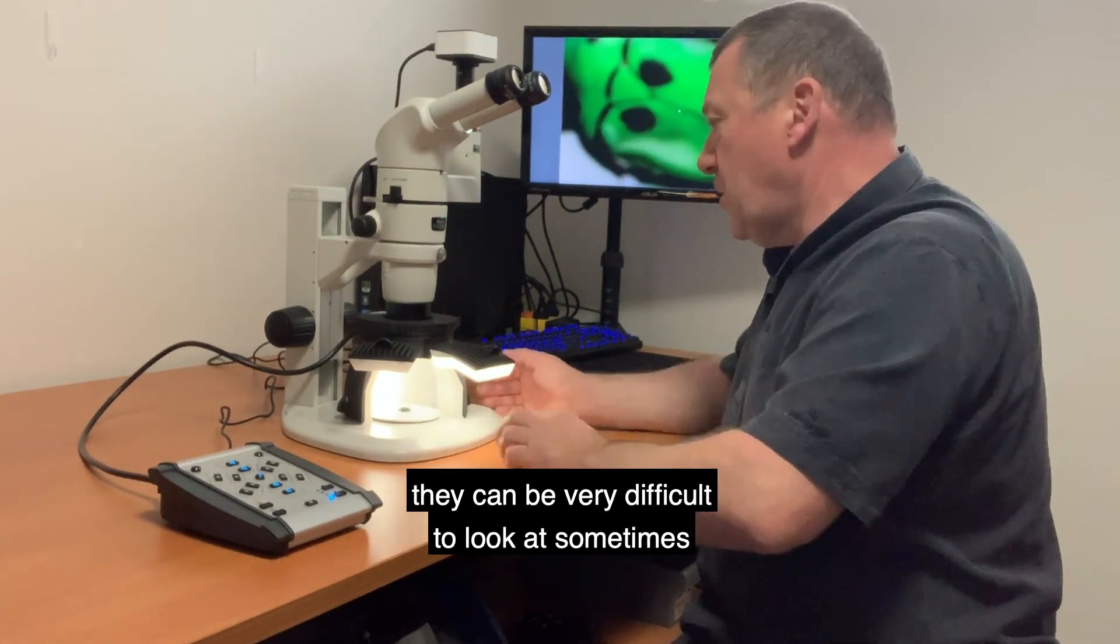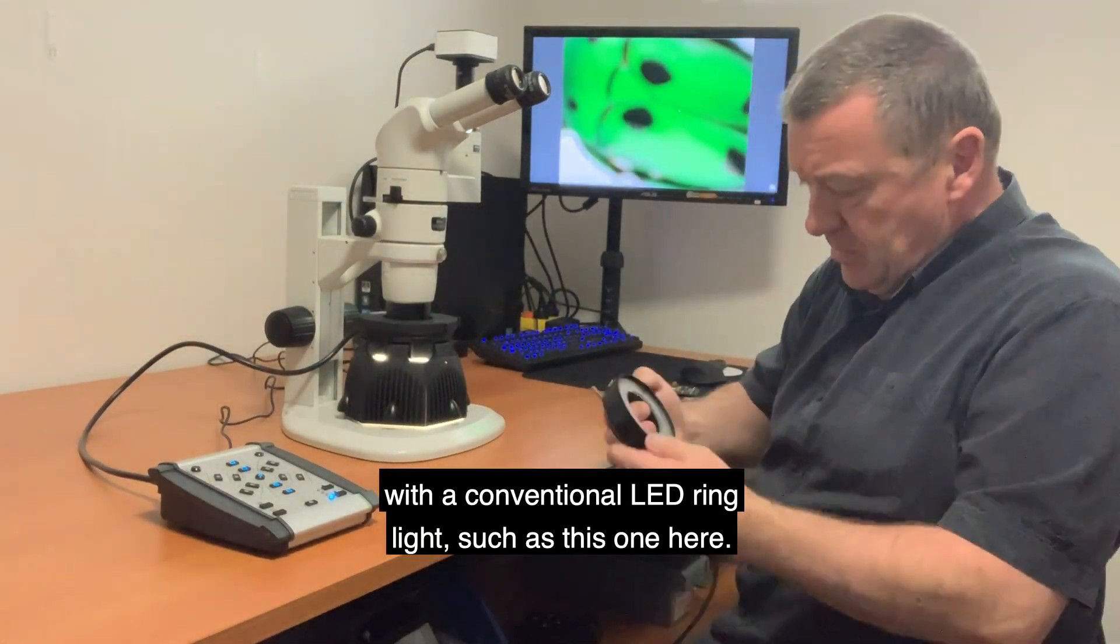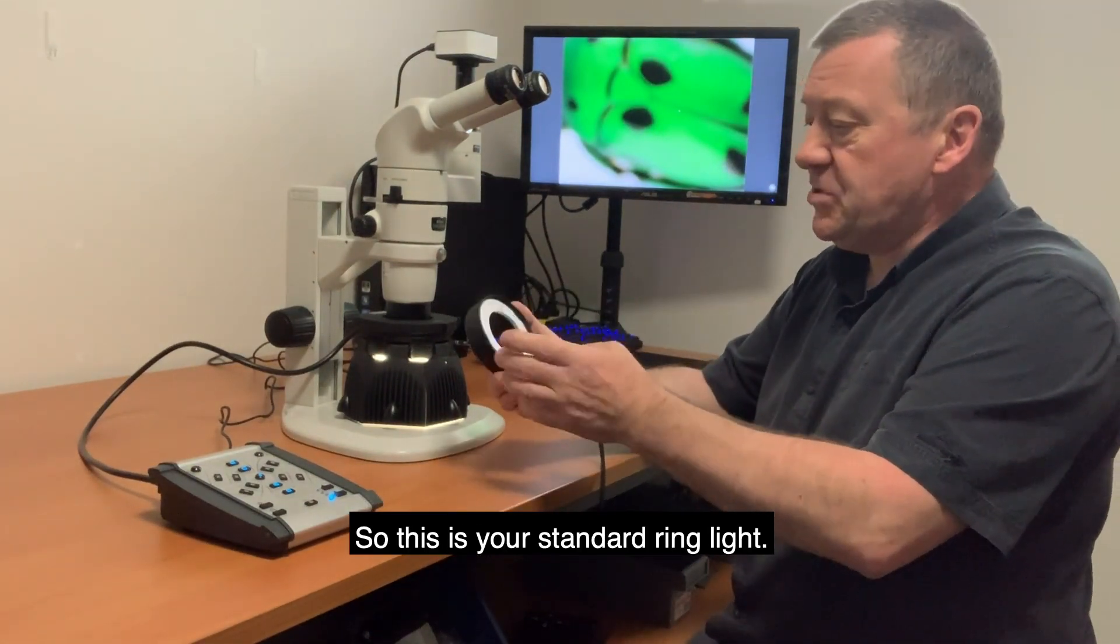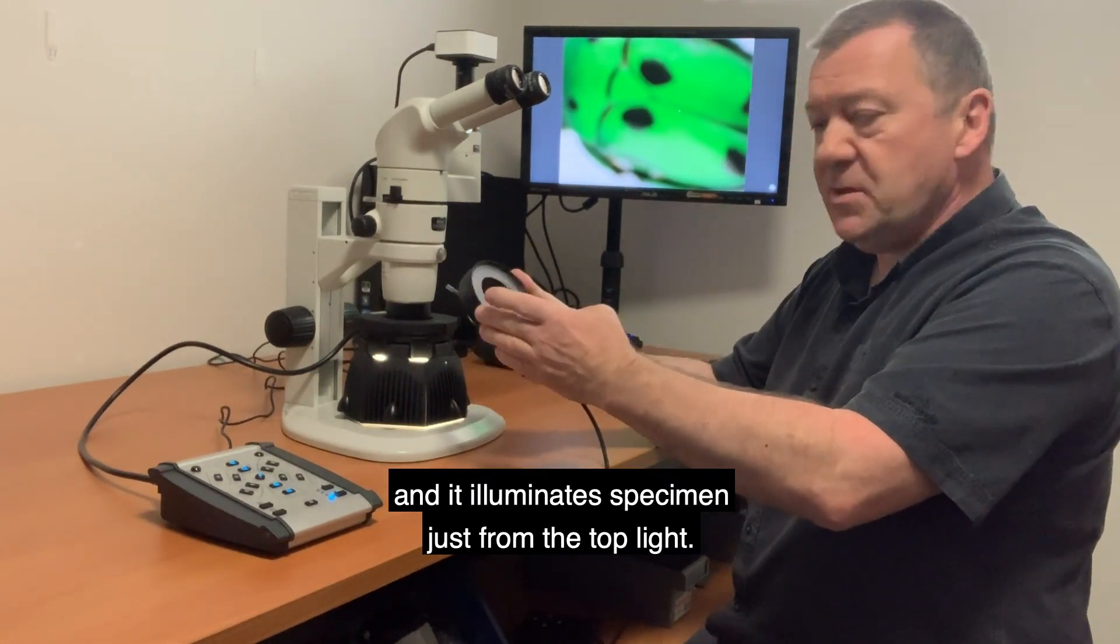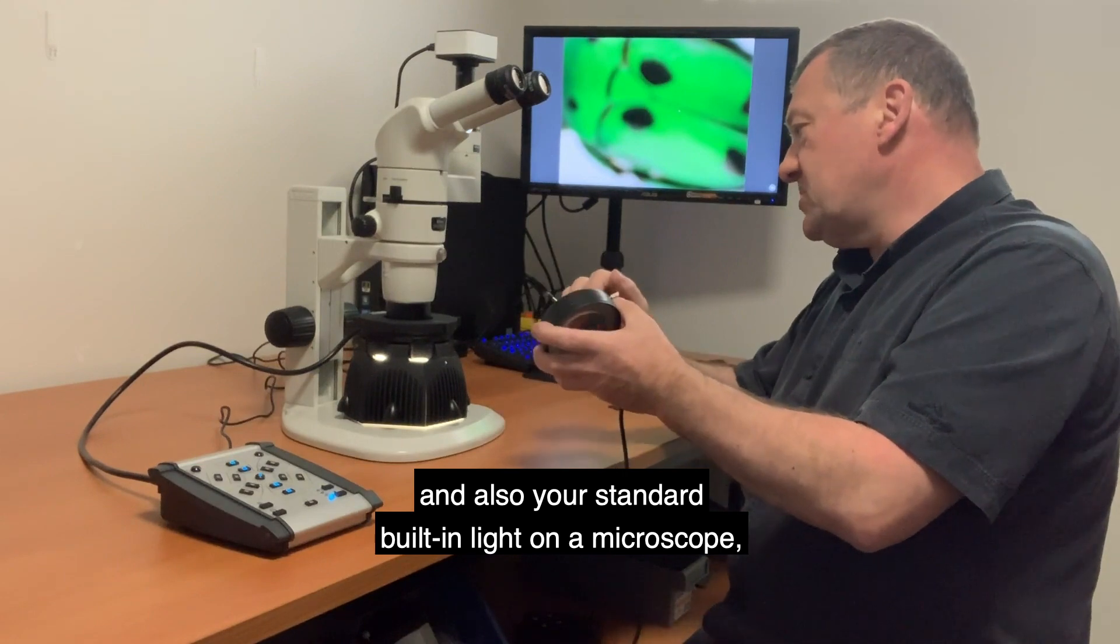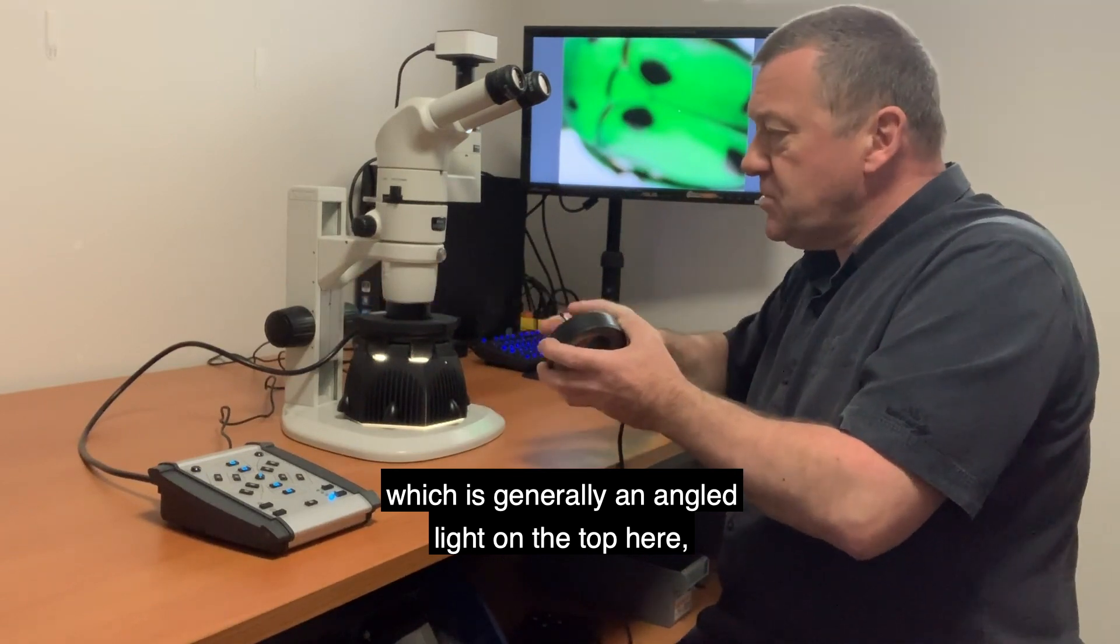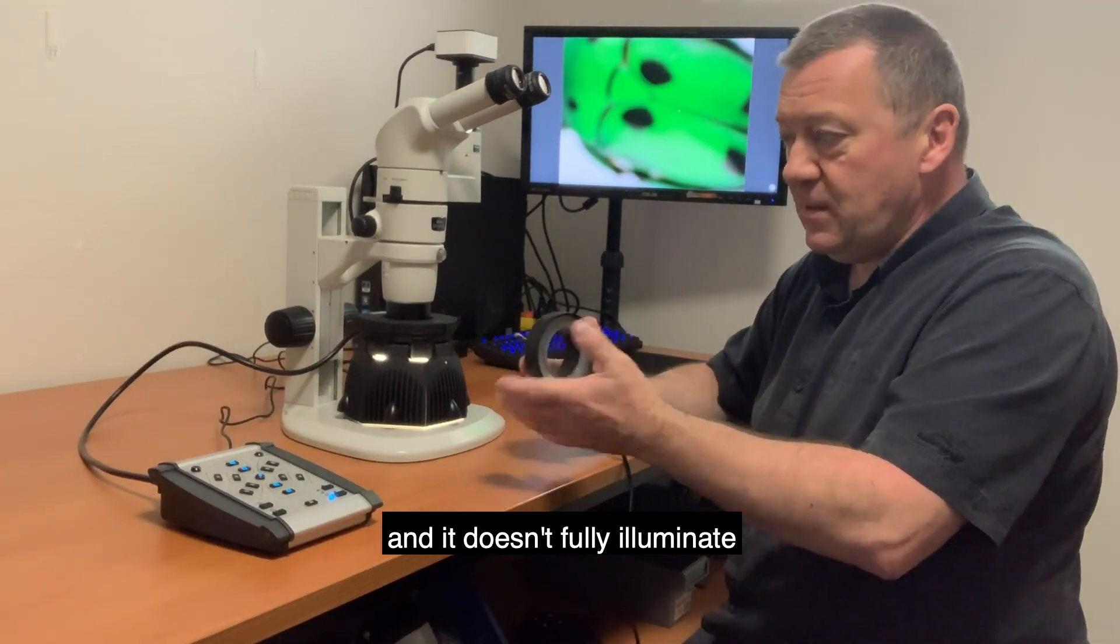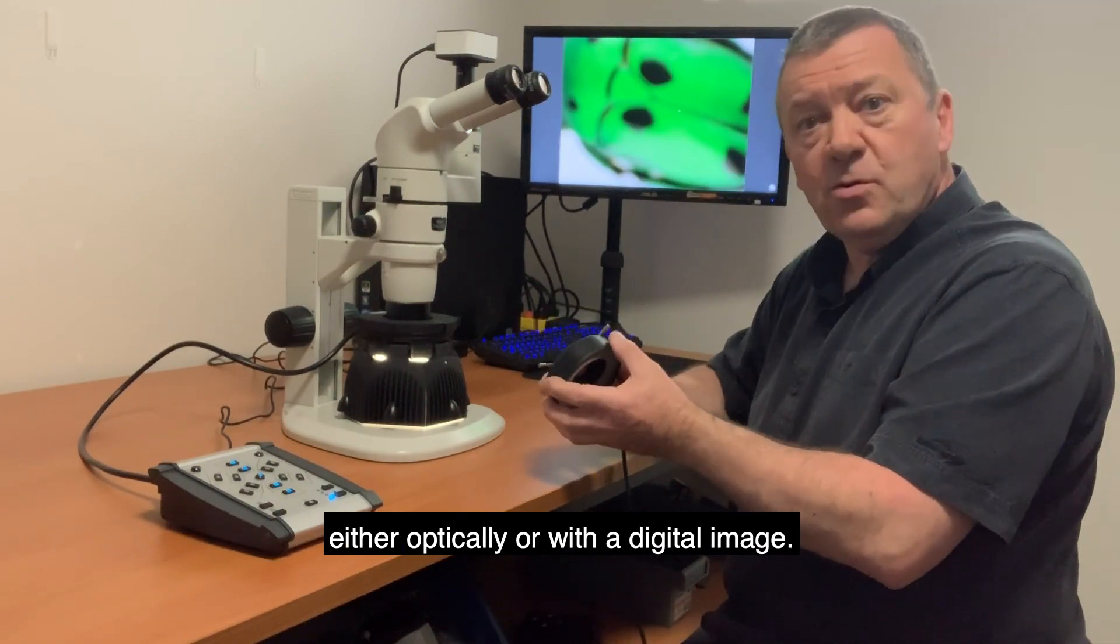This is your standard ring light with 72 LEDs, and it illuminates your specimen just from the top light. The problem with this sort of light, and also your standard built-in light on a microscope, which is generally an angled light on the top, is that it can cast a shadow on your specimen and doesn't fully illuminate everything that you want to show, either optically or with a digital image.